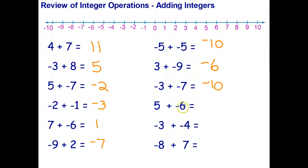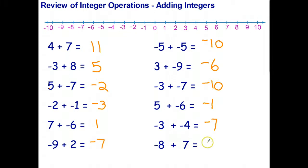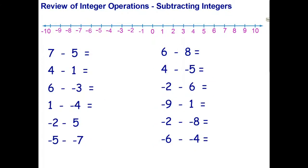Here I've got five dollars in one pocket and a bill for six dollars in another pocket — I can pay off part of the bill but still owe one dollar. Here again I've got two bills for three dollars and four dollars — altogether I owe seven dollars. The last one: I've got a bill for eight dollars, I can pay off seven dollars of the bill but still owe one dollar.